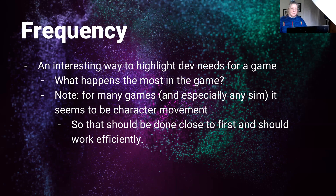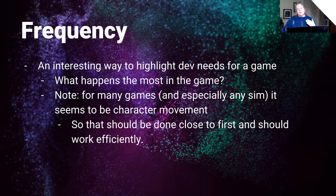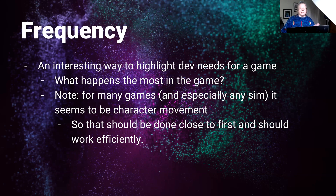Frequency is important because when developing a game, the frequency of different features can be taken into account. The higher the frequency of something — the more often it happens in the game — the sooner it should perhaps be developed. So you can ask: what happens most in the game? For simulations, character movement is one of the most common things. Therefore it should be developed early and be very efficient, since it can potentially take up a lot of cycles by happening all the time.